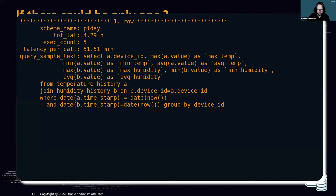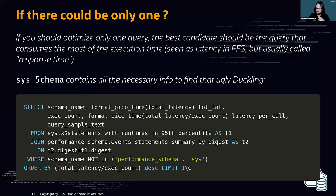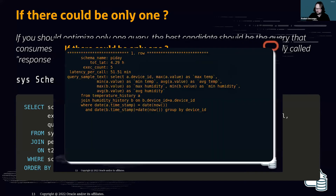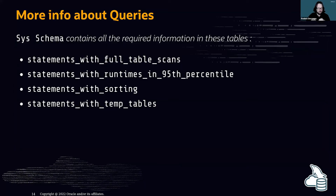The query provides information from performance_schema and sys schema. The sys schema also contains all the required information to find very bad queries — all statements doing full table scans, statements taking the most time, and statements doing sorting and using temp tables. You can find all these statements in performance_schema and sys schema in MySQL.